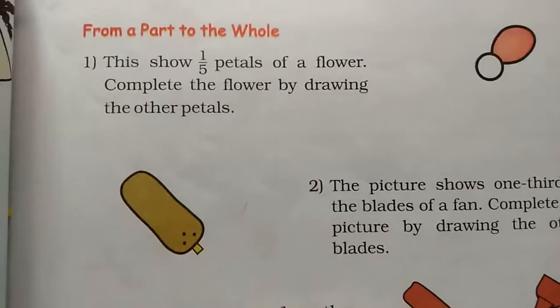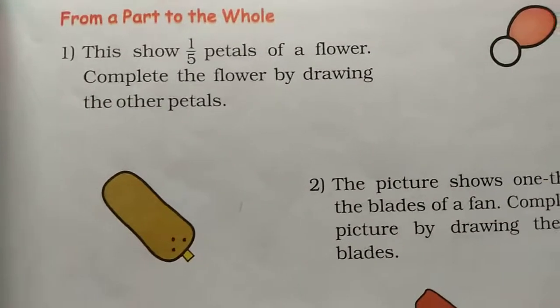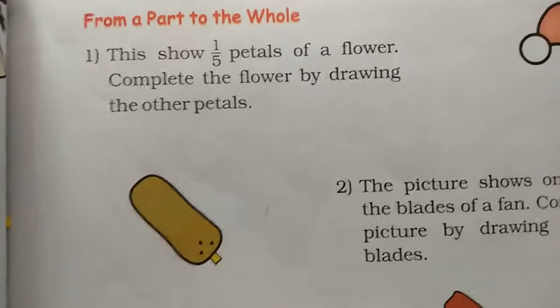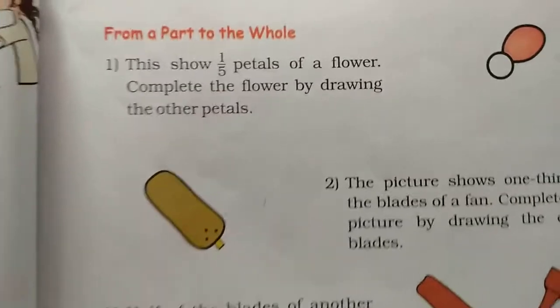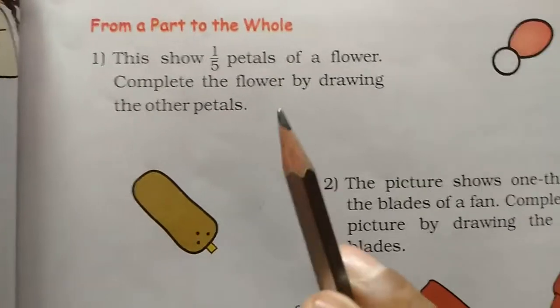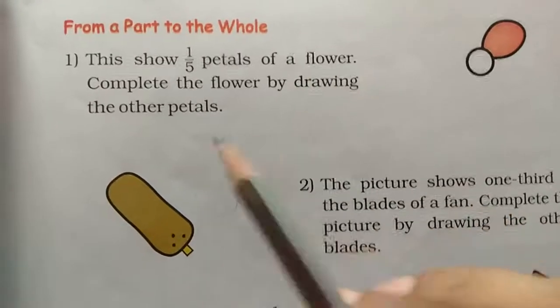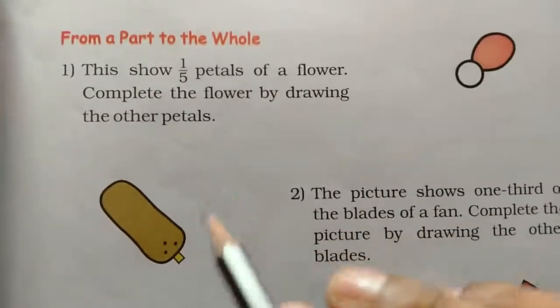They are saying that you have to go from a piece to a piece. Now see. This one shows one out of five petals of a flower — complete the flower by drawing the other petals.